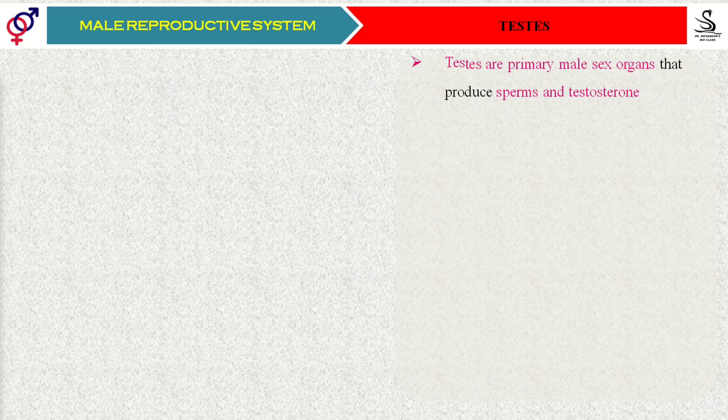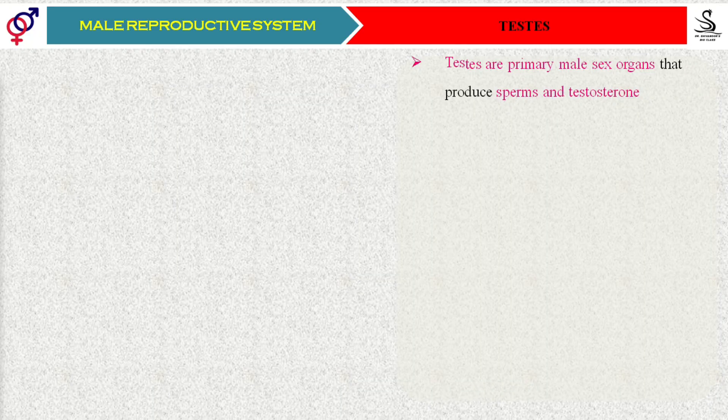Students, as you know, testes are considered as male primary sex organs. The question is: why do we consider them primary sex organs? Because testes are the ones that help in the production of sperms, and along with that they even act as an endocrine gland by secreting the hormone testosterone.